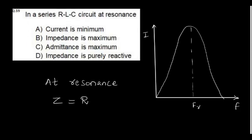In a series RLC circuit at resonance, current is maximum. If current is maximum, that means impedance is minimum. Saying impedance is maximum is wrong. At resonance, impedance equals only the resistive component of the circuit — that is also wrong as a standalone choice. The right answer is that admittance is maximum.